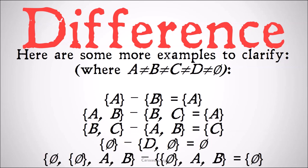And the class of {∅, {∅}, A, B} minus the class of {{∅}, A, B} is simply the set of the null set, because we take out A, we take out B, we take out the set of the null set. So we're left with a class whose only member is the null set, which is just the set of the null set.